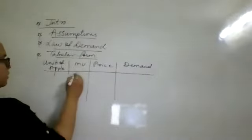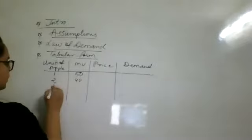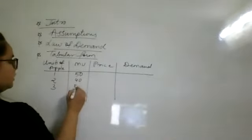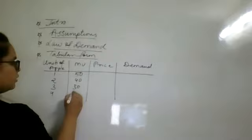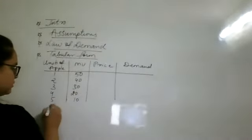So marginal utility is 1 apple, 50 satisfaction, 2 apples, 40, 3 apples, 30, 4 apples, 20, 5 apples, 10, 6, then 0.